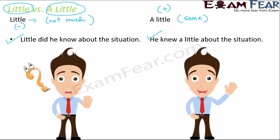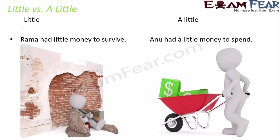Let's see one more example. 'Rama had little money to survive' — that means Rama had almost no money to survive; he had so little that even survival was difficult. Now look at this example: 'Anu had a little money to spend.' That means Anu had some money — even though it is a small amount, she had enough to spend. So when you want to say a person had almost nothing, use 'little.' When the person had something they could spend, use 'a little.'